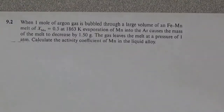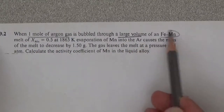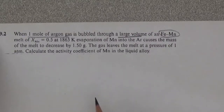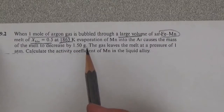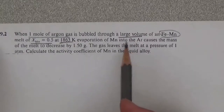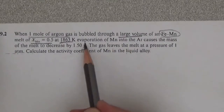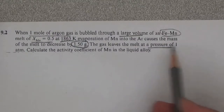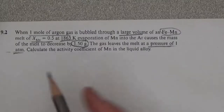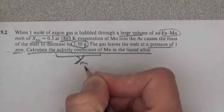From problem 9.2, we're saying if you have one mole of gas that bubbles through a large volume of a mixture of iron-manganese, in which the composition is given as a one-to-one ratio of manganese to iron and you're given the temperature. Determine the activity coefficient gamma of manganese.